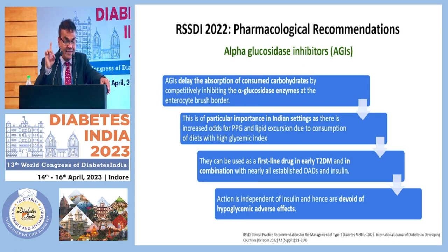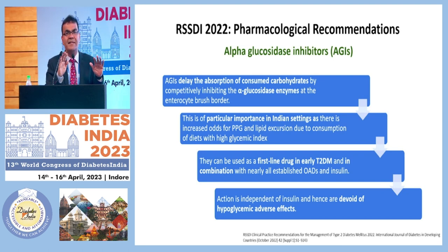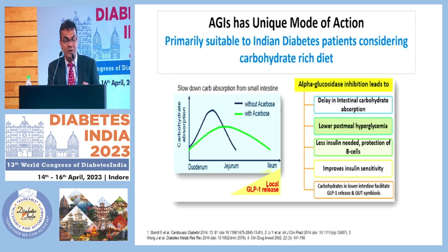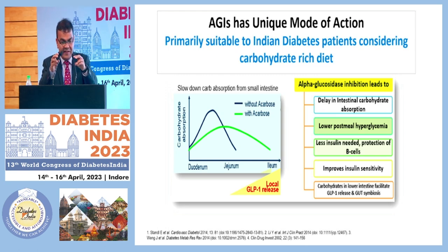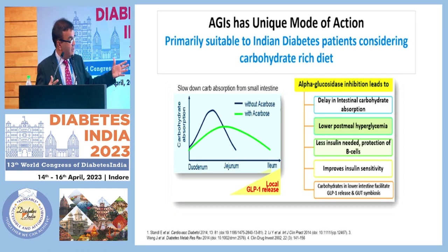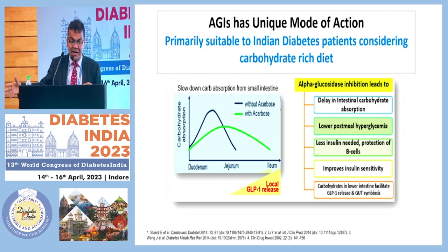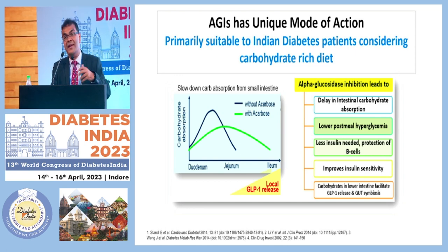The action of alpha-glucosidase inhibitors is independent of insulin, hence devoid of hypoglycemia and adverse effects — it has nothing to do with pancreatic beta cells and is completely independent, so it can be used even in insulin-deficient patients. Alpha-glucosidase inhibitors have a unique mode of action: they delay intestinal carbohydrate absorption, lower post-meal hyperglycemia, require less insulin — protecting beta cells and improving insulin sensitivity. Carbohydrate reaching the lower intestine also facilitates GLP-1 release and gut symbiosis, which explains why patients on AGI often reduce weight and have increased satiety.